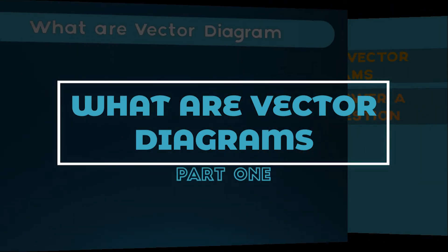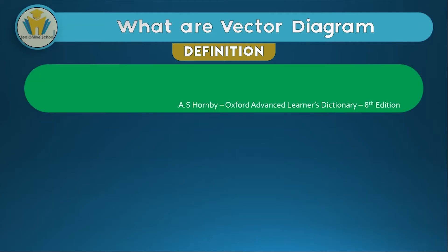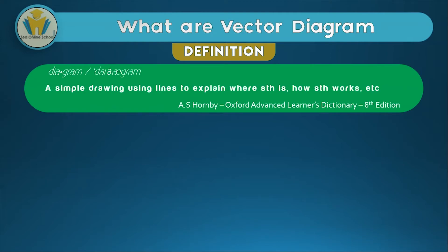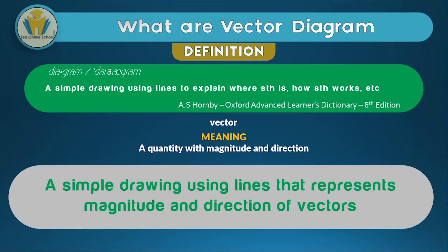First, we're going to define vector diagrams. A diagram is a simple drawing using lines to explain where something is or how something works. A vector is a quantity with magnitude and direction. Therefore, a vector diagram is a simple drawing using lines that represents the magnitude and direction of vectors.